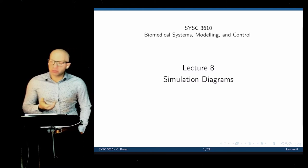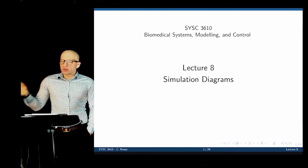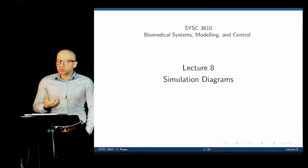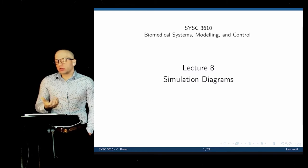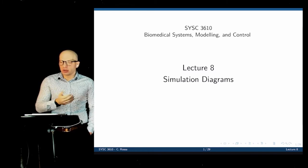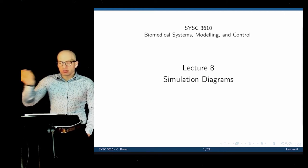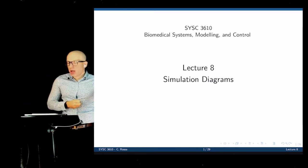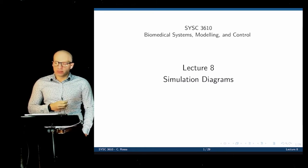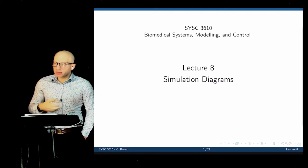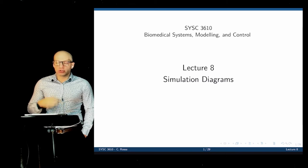For example, if you have a mass-spring-damper system, we have the input as a force and the output could be the position. If you want to calculate the speed, you need to further process the data. Whereas if you have a simulation diagram, the speed will be available somewhere in that diagram — you can just probe that signal there. This will help us simulate all dynamic systems and create models in MATLAB and Simulink.